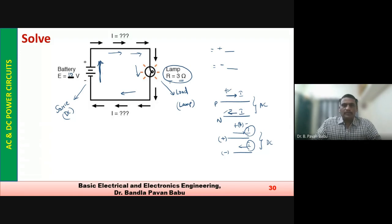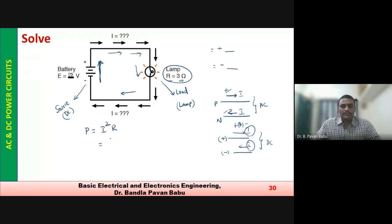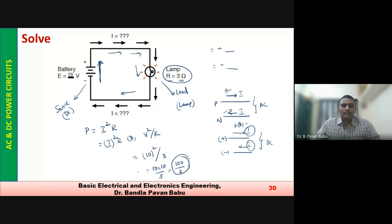There is a source and a load with a path. The power absorbed by the resistor is I²R. Since we know the voltage but not the current, we use the formula V²/R: 10² / 3 = 100/3 W. This is the power absorbed by the load.